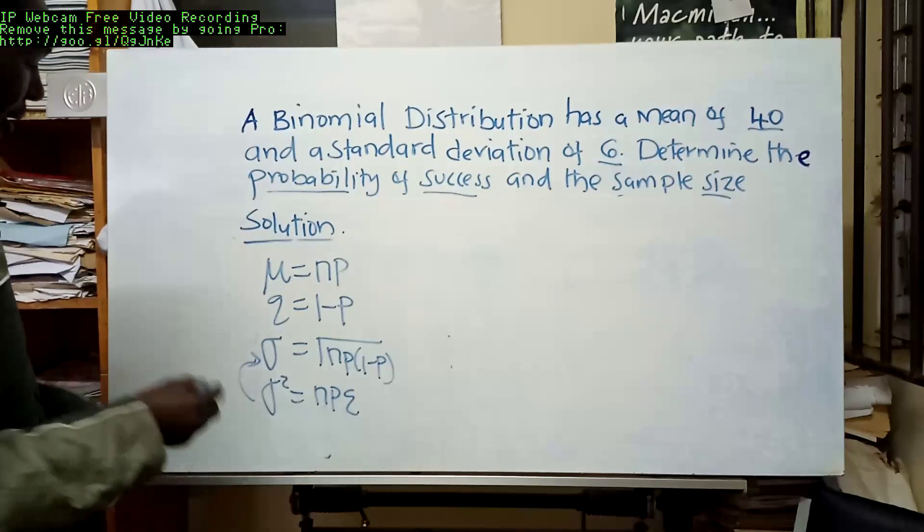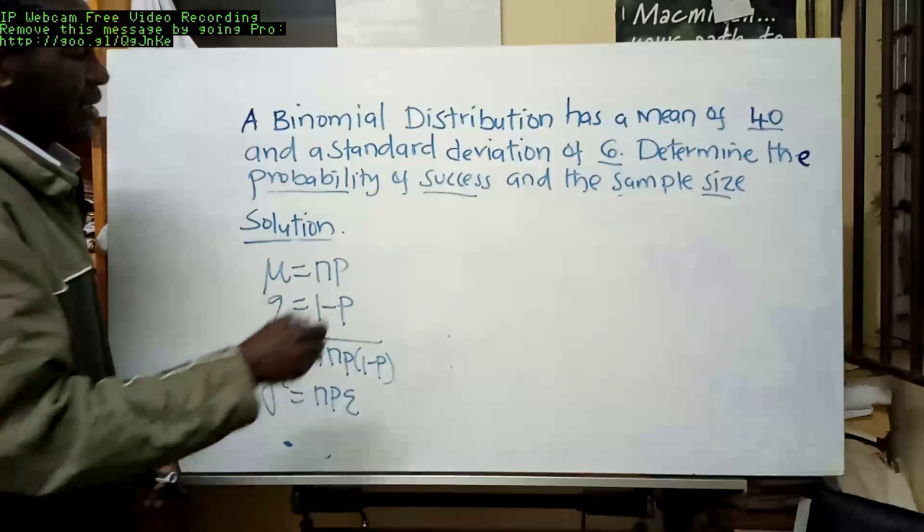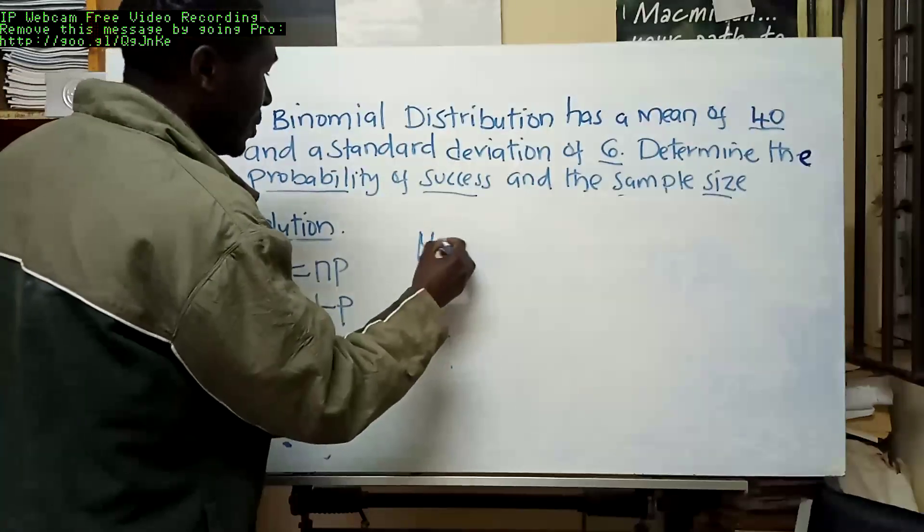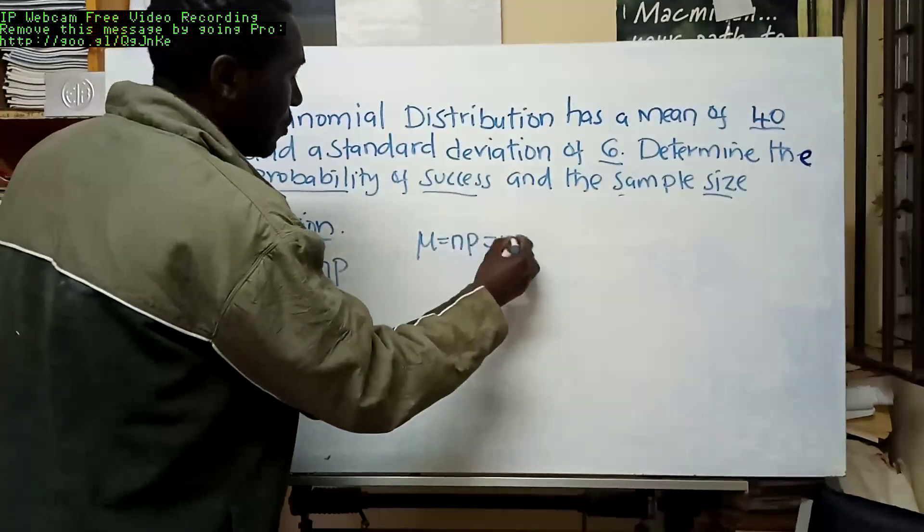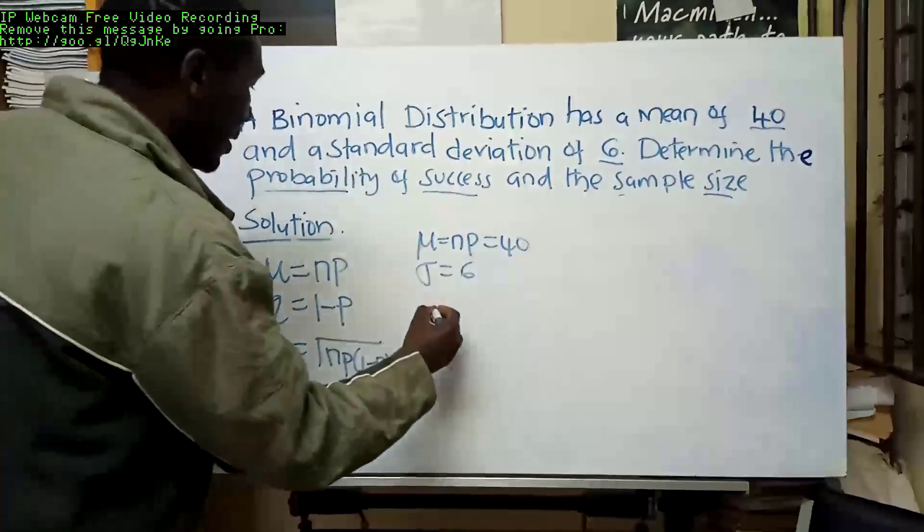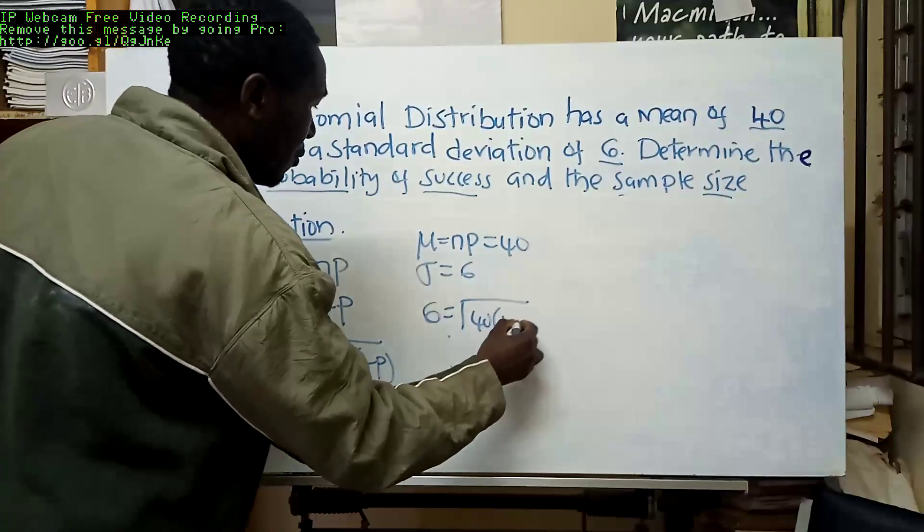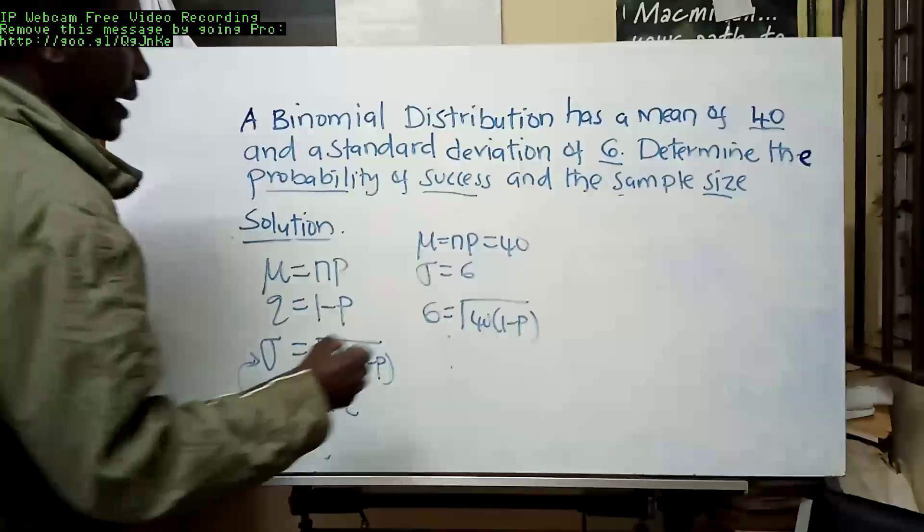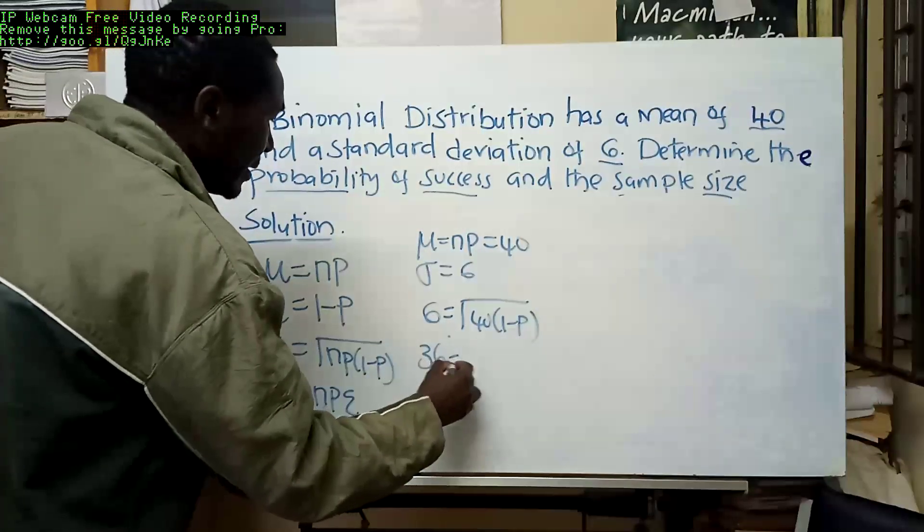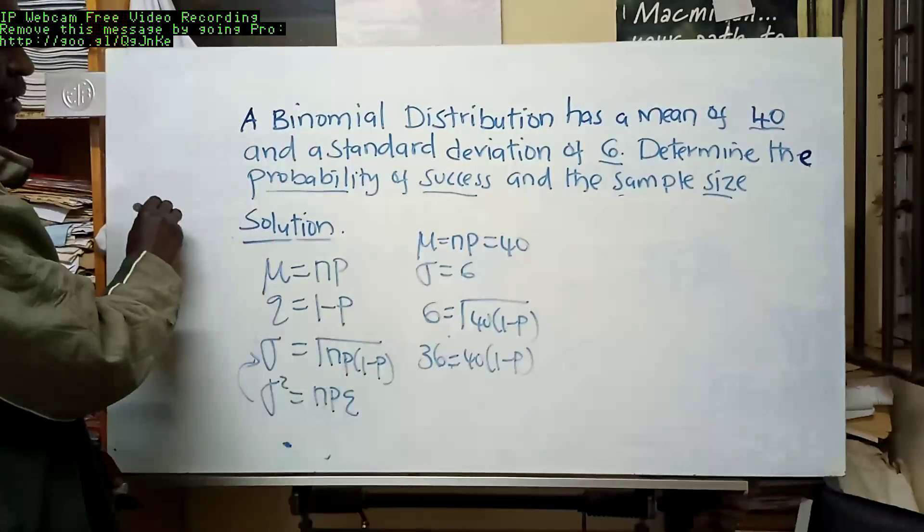Let's list down the things we have from the question. We know the mean, which is equal to n times p, equals 40. And the standard deviation is 6. If we put them there, we get 6 equals the square root of 40 times (1 minus p). Square both sides, we get 36 equals 40 times (1 minus p).